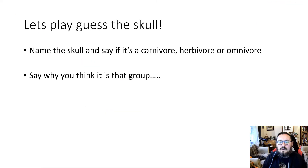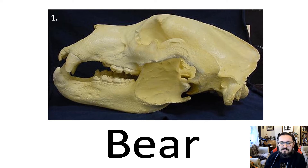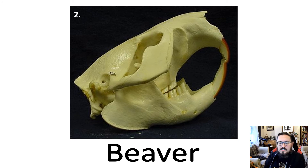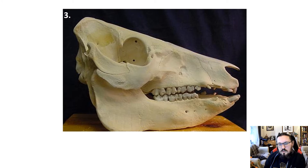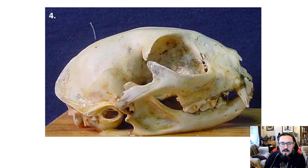Pause the video and try to work out what each skull is — look at the shape, position, where muscles might attach, and the different types of teeth. The first skull is a bear. The next one — look particularly at the teeth — is from the rodent group; this is actually a beaver, with a long sloping jaw and quite flat molars.